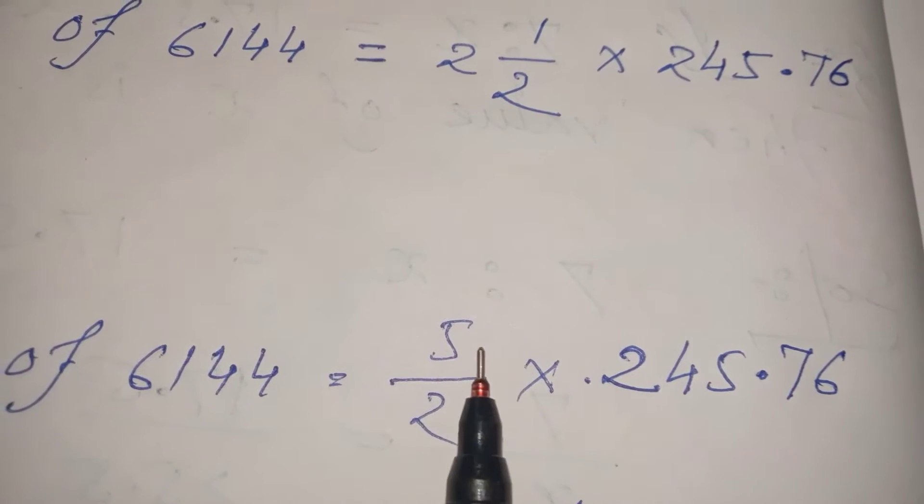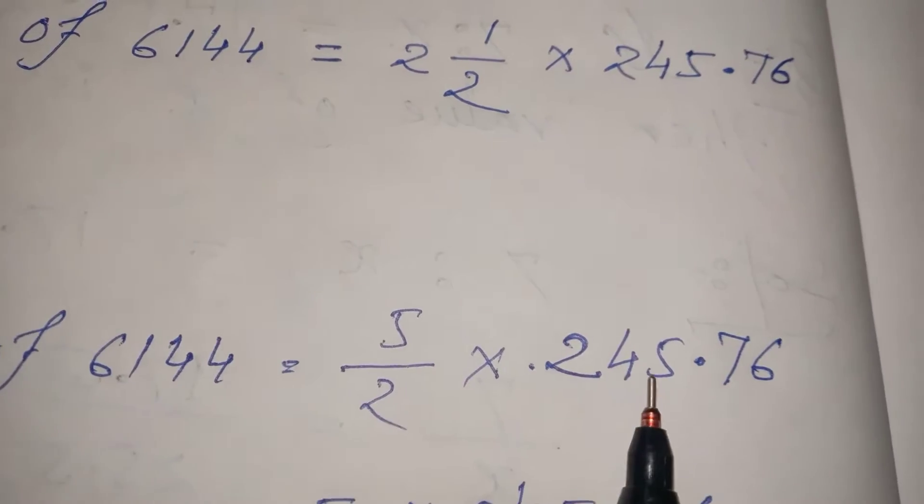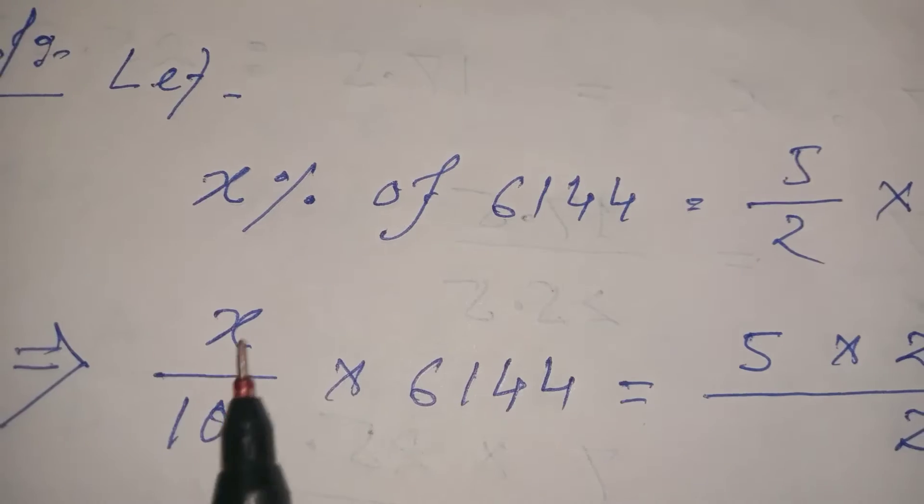First, let's convert 2½ into a fraction. When we convert this mixed number, we get 5/2 × 245.76.